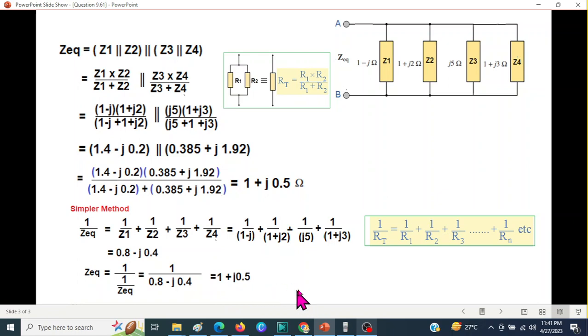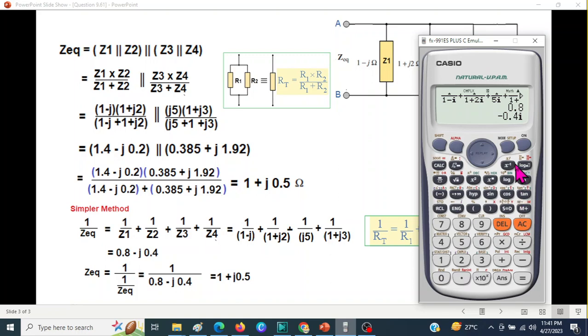To find the answer, that is a simple way also. If in the calculator we just take the inverse sign here, press the inverse sign, the answer was already stored here, the inverse of the answer. And we get this value, press SD, it is 1 + 0.5j. I hope you have been able to follow this.